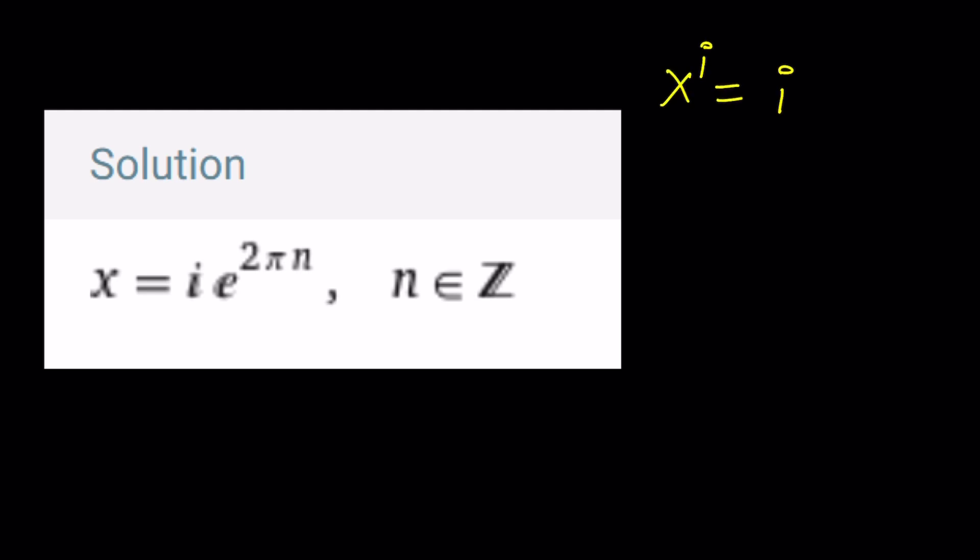you get (i·e^(2πn))^i. When you distribute this, you get i^i and e^(2πni). This is the critical part - this is equivalent to 1. Therefore, you multiply e^(-π/2) by 1, which gives the same thing.